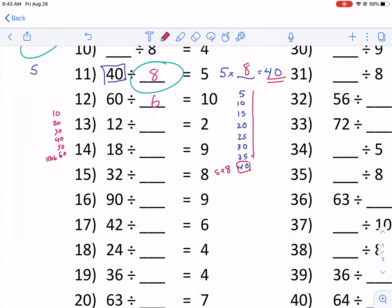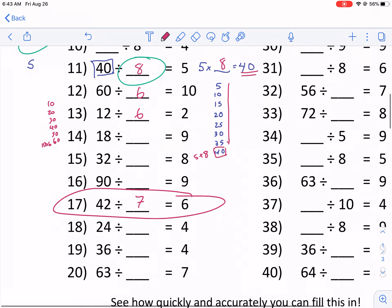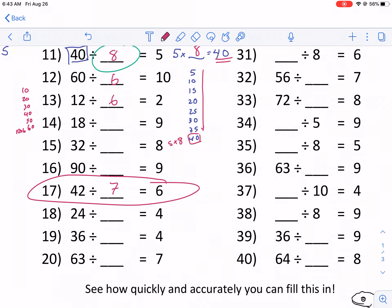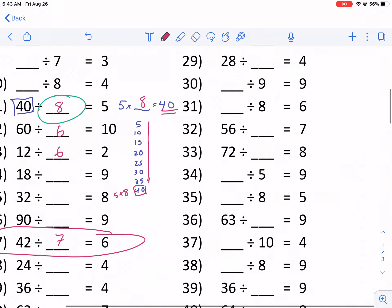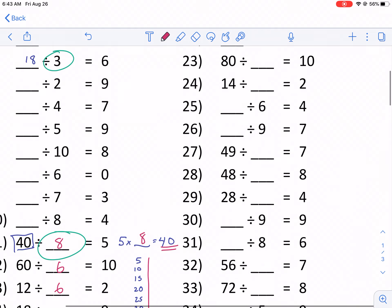Some of these other ones are going to be a little bit easier. So like 2 times 6 would be 12. These are kind of your standard. So I'm going to jump down to 17 here. 6 times 7. Those are kind of like your times tables. So if you can do your times tables through 12, you're definitely going to be able to do your division.